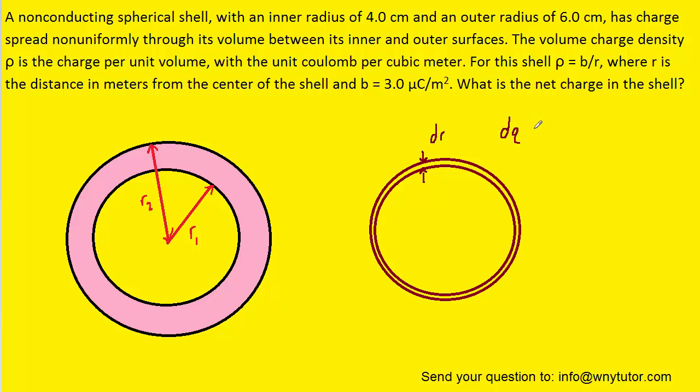Now, the amount of charge in that thin shell would be the charge per unit volume, which the question denotes as rho, multiplied by the actual volume of that shell. It's a very thin shell again, so we'll use the notation dv. We're next going to consider an expression for this dv term.